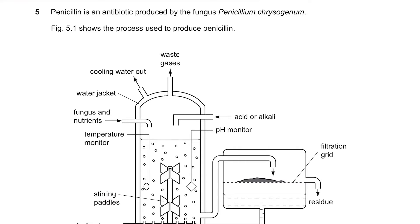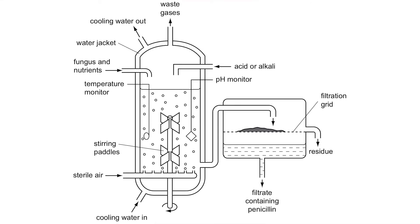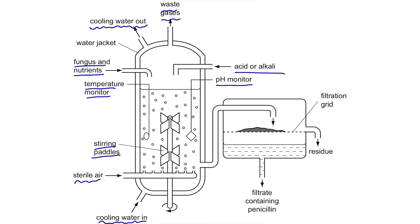Question 5. Penicillin is an antibiotic produced by the fungus Penicillium chrysogenum. Figure 5.1 shows the process used to produce penicillin. The stirring paddles in the middle are constantly rotating to mix the contents evenly. Fungus, nutrients, and acid or alkali are added through passageways. Temperature and pH monitors ensure ideal conditions. Cooling water supplied around the water jacket controls temperature, and sterile air is supplied while extra gases exit. The solution containing penicillin is then purified by filtration and the filtrate is collected.